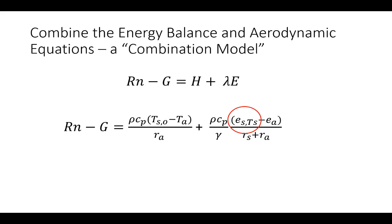If we take our energy balance equation and substitute in the aerodynamic equations on the right-hand side, we get what's called a combination model. When people talk about ET models as a combination equation, they mean combining the energy balance idea with the aerodynamic transport concept. What complicates this is a nonlinear term — the saturation vapor pressure at the surface temperature — making it a nonlinear equation.